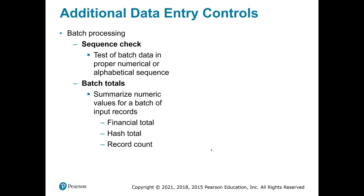Other controls include sequencing. In batch processing — where you don't process in real time but instead collect updates and process them all at once — you might process purchase orders every Friday, taking all of them in sequence and processing them in order. Batch totals are also used to verify accuracy. These might include financial totals, like making sure net income equals revenue minus expenses; hash totals, where you add together all numbers to make sure they match; or a record count, like confirming that eight sales should produce eight new rows in the database table.